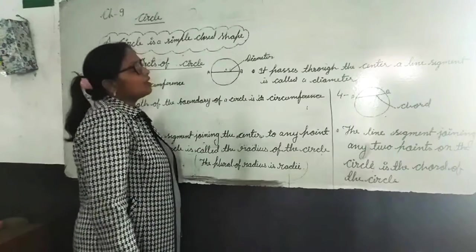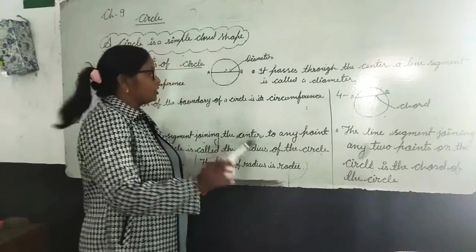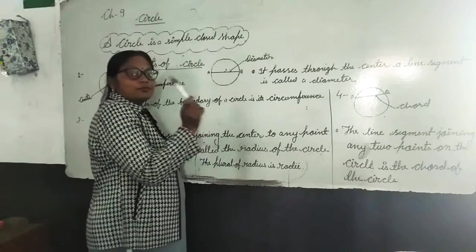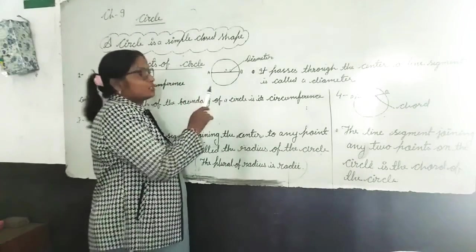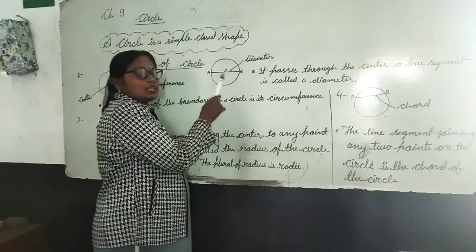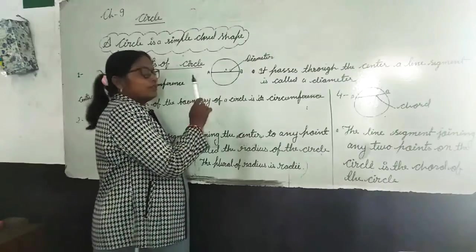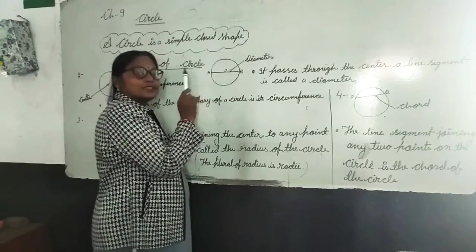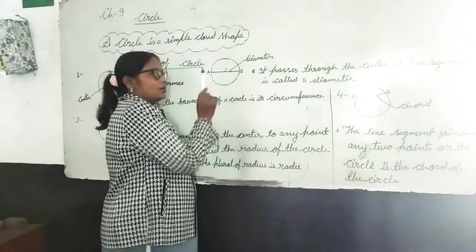One more thing: the diameter is the longest chord of the circle. So we can also call the diameter a chord — it is the longest chord.